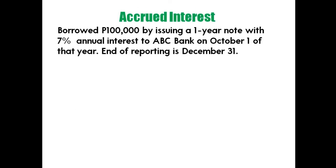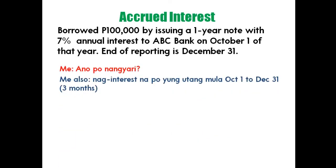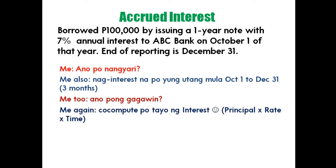Accrued interest problem: Borrowed 100,000 by issuing a one-year note with 7% annual interest to ABC Bank on October 1. End of reporting period is December 31. Interest has been running from October to December — three months. We compute interest using the formula PRT: Principal times Rate times Time.